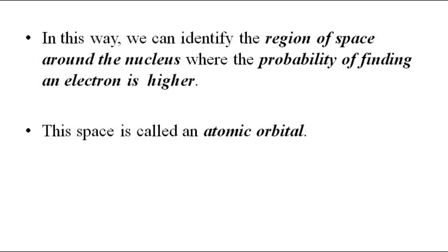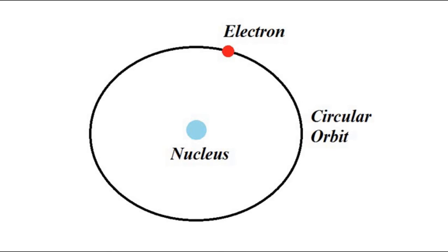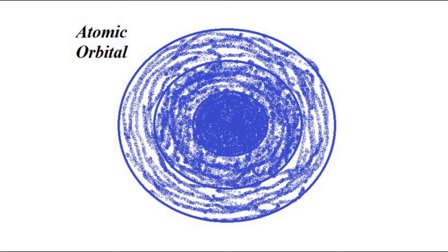Here the shift happens: instead of the circular orbit concept where we know exactly where the electron is located — as per Bohr's postulate, we can exactly determine which orbit the electron is in — the focus shifted from orbit to orbital, which is a three-dimensional space. The electron can be anywhere within this space. We can only determine the probability of finding the electron, and the electron has a higher probability of being found in the deep blue inner region of the orbital.